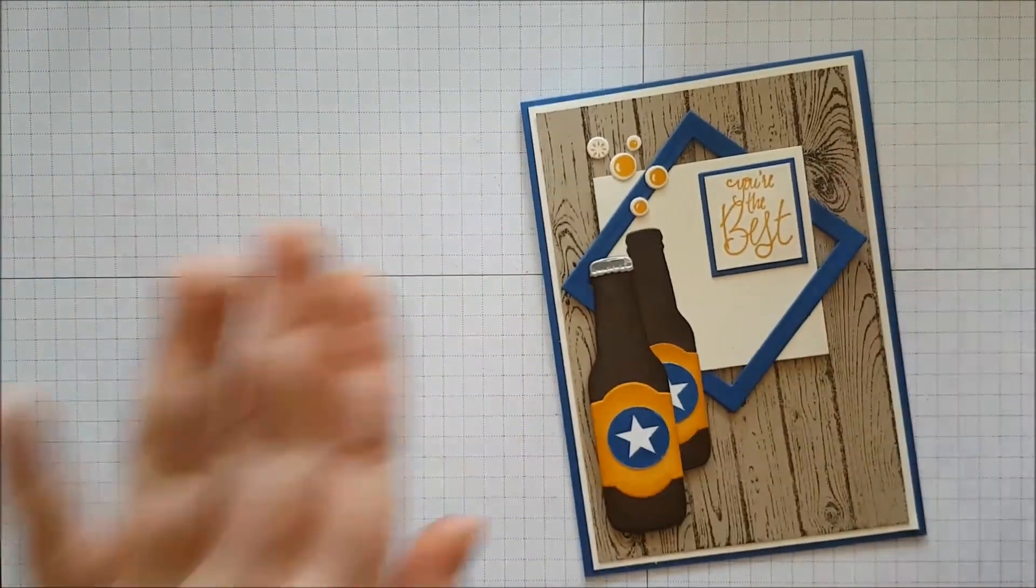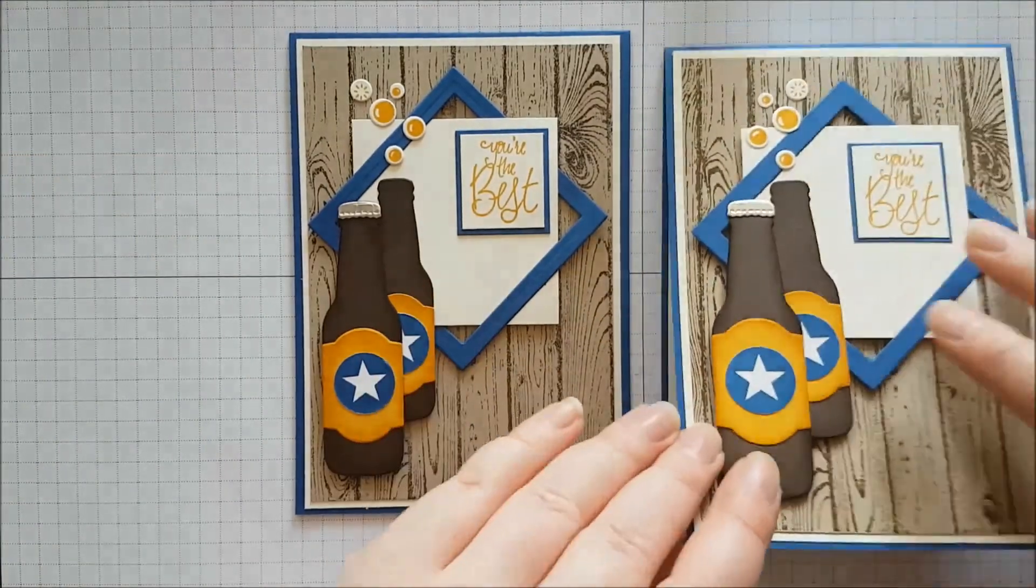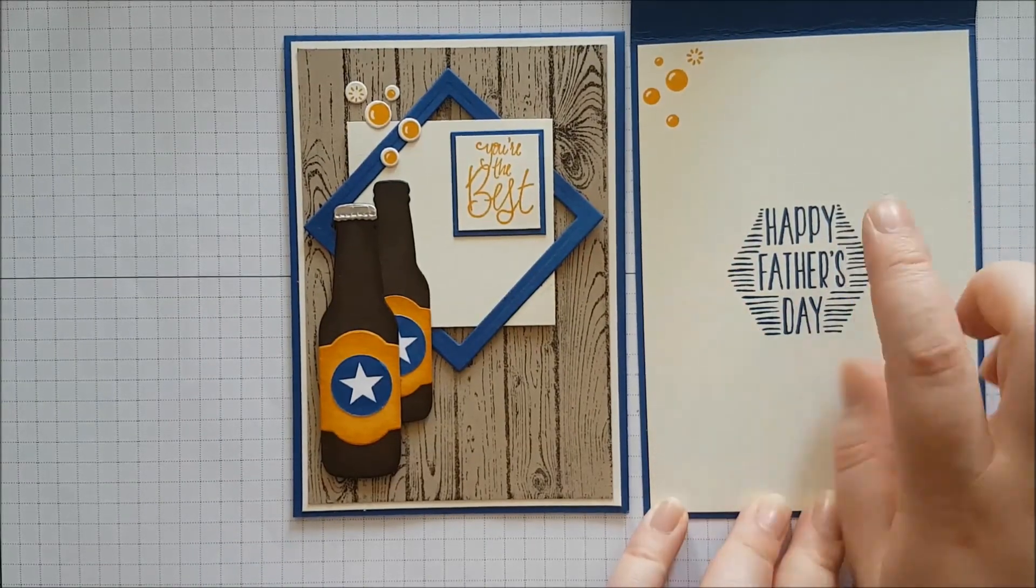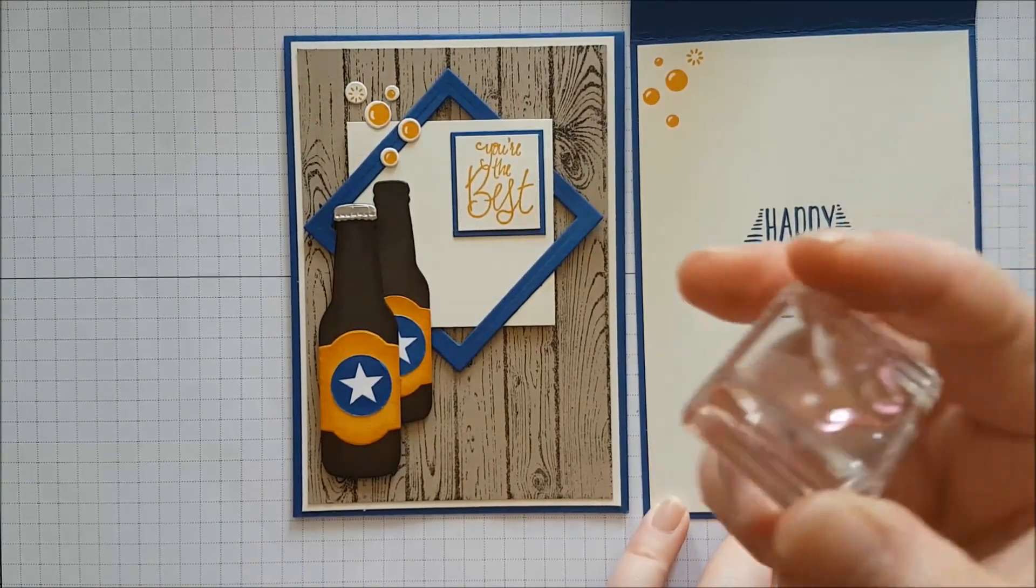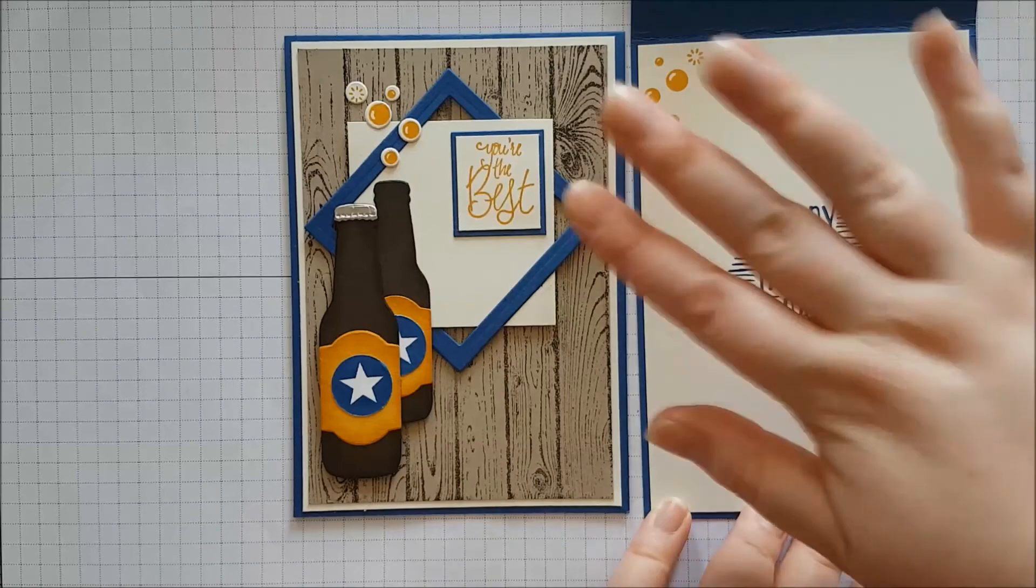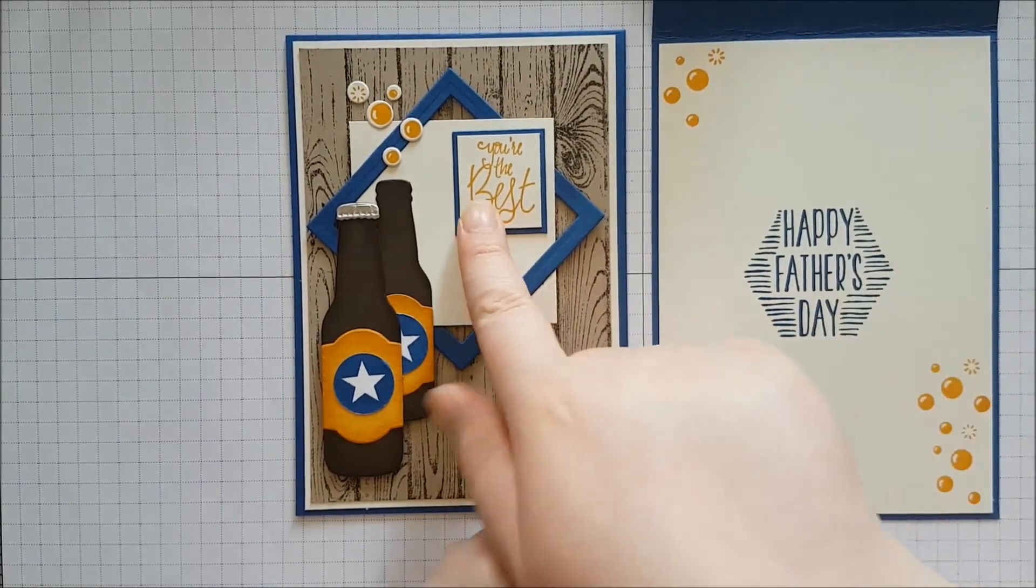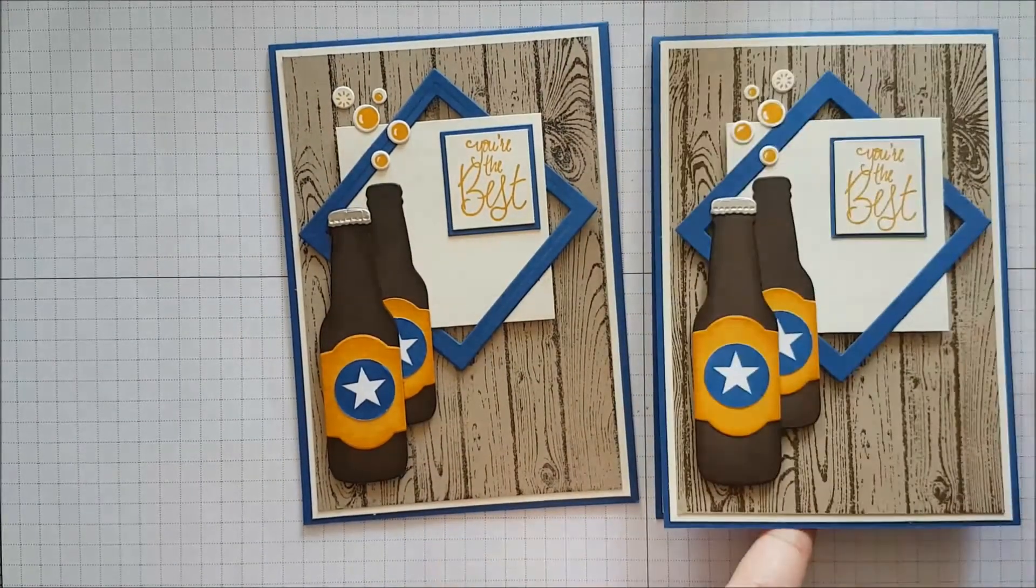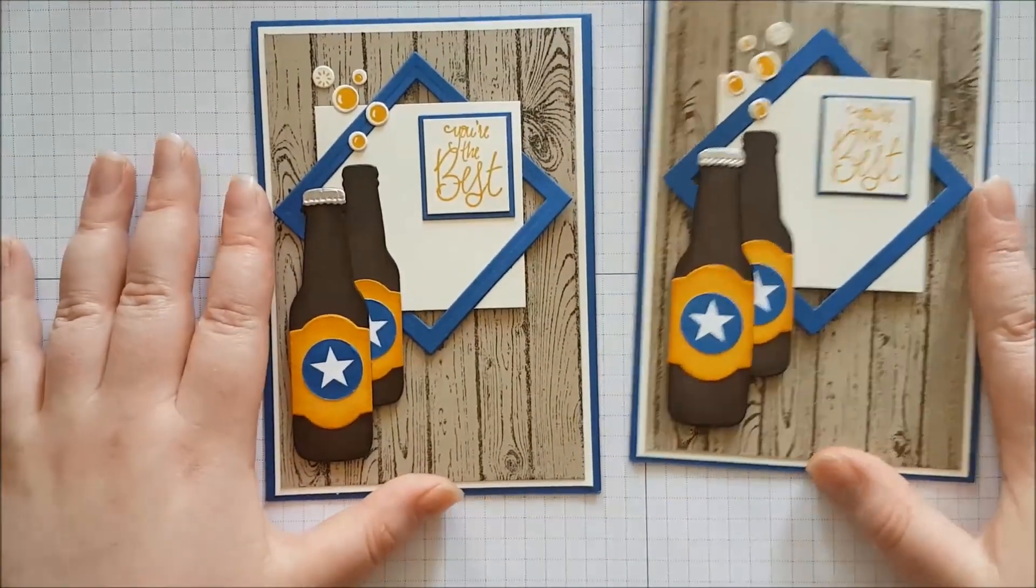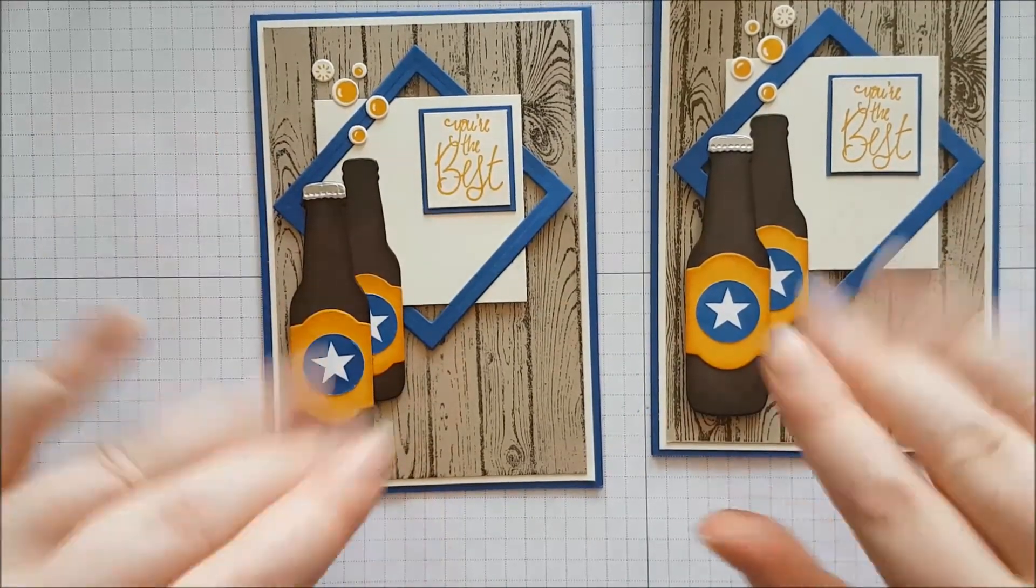And that is our card done. Of course if you're going to decorate the inside, all I've done for that is put some Very Vanilla down, stamped my Happy Father's Day sentiment in Blueberry Bushel, and used the little bubble stamps in Crushed Curry to decorate that. You can decorate how you like, you can have bottles coming up one side. You could have your Happy Father's Day sentiment on the front instead of this depending on the size of yours. But that is our card for today so I hope you enjoyed it. Please do give me a thumbs up and subscribe. Any comments below are much appreciated also, and I hope you have a lovely day. Bye!